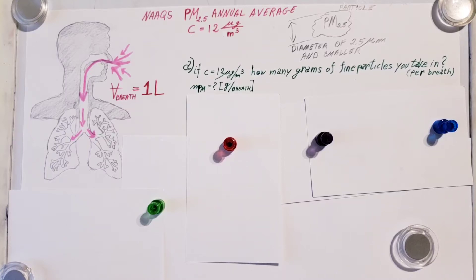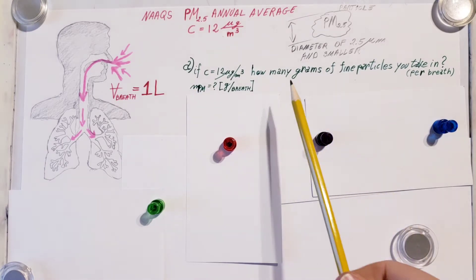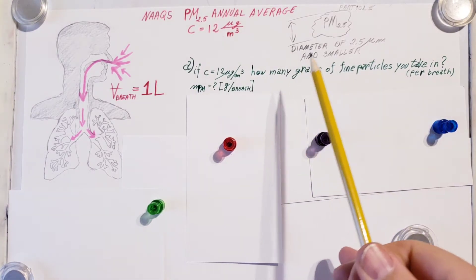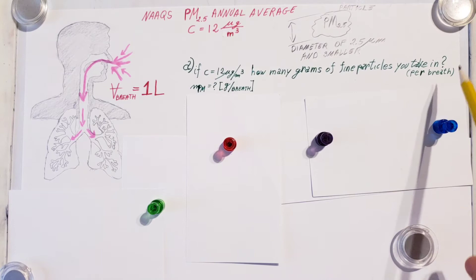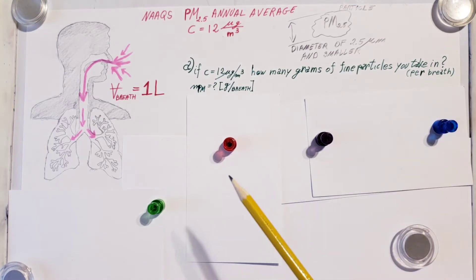Okay, here we're going to be working on an air pollution problem. We're going to be considering how many fine particles we're breathing in. First, they want us to find how many grams of fine particles we take in with one breath, and then in the second part they want us to find how many individual particles we take in with each individual breath.